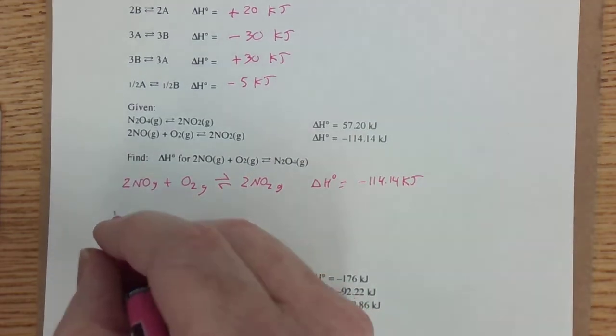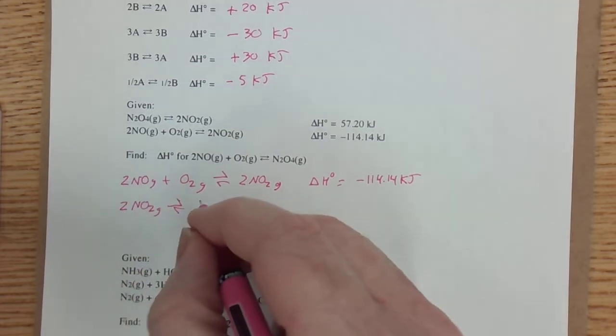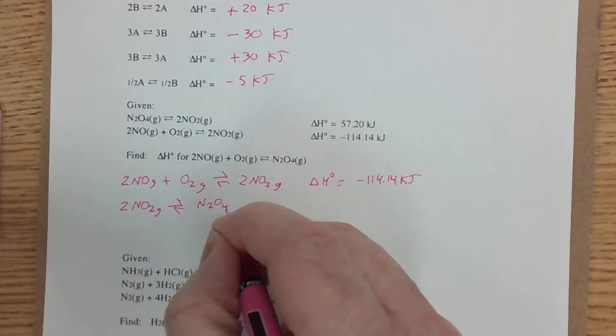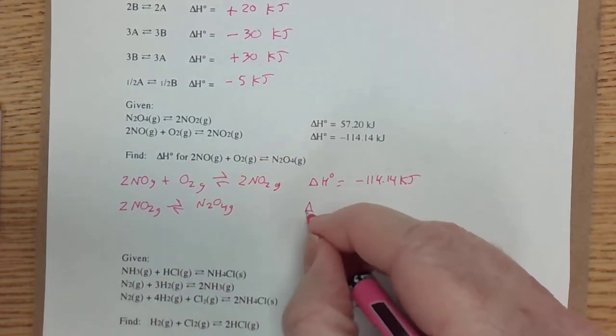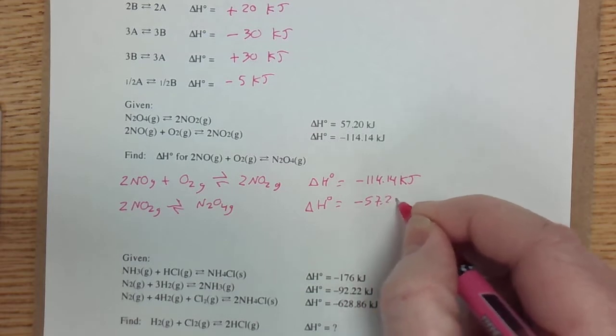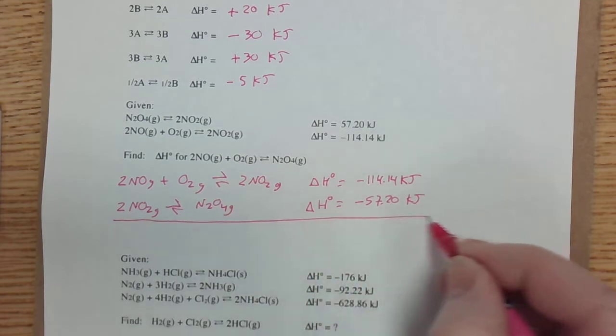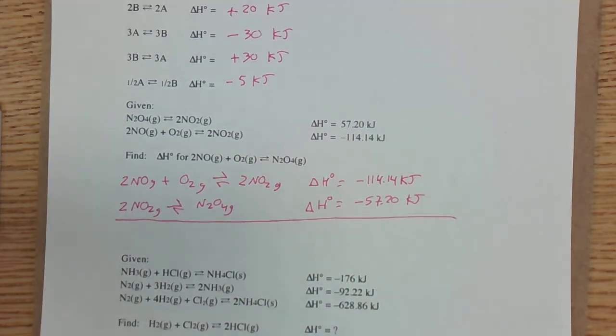To get N2O4 onto the correct side, I'm going to have to reverse this first equation. When I reverse that first equation, my new delta H naught equals a negative 57.20 kilojoules.